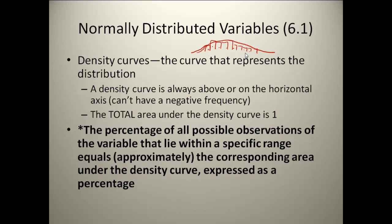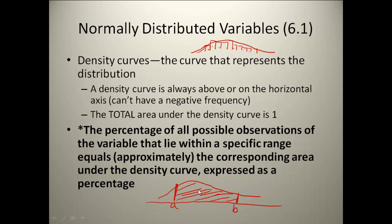One important thing we will come back to is that the percentage of all possible observations of a variable that lie within a specific range equals approximately the area under the density curve expressed as a percentage. So if I have this density curve and I'm interested in what values lie between A and B, I could find the area underneath my density curve, and that would correspond to the percent of values that would lie between those specific values.